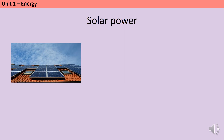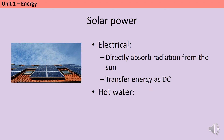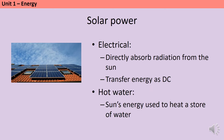Solar power can be used directly to make hot water for heating, or to generate electricity. Unlike other renewable energy resources, this doesn't involve any turbines. Instead, solar panels directly absorb radiation from the sun and transfer this energy as direct current. Alternatively, solar power can be used in hot water panels, which use the sun's energy to heat a store of water.